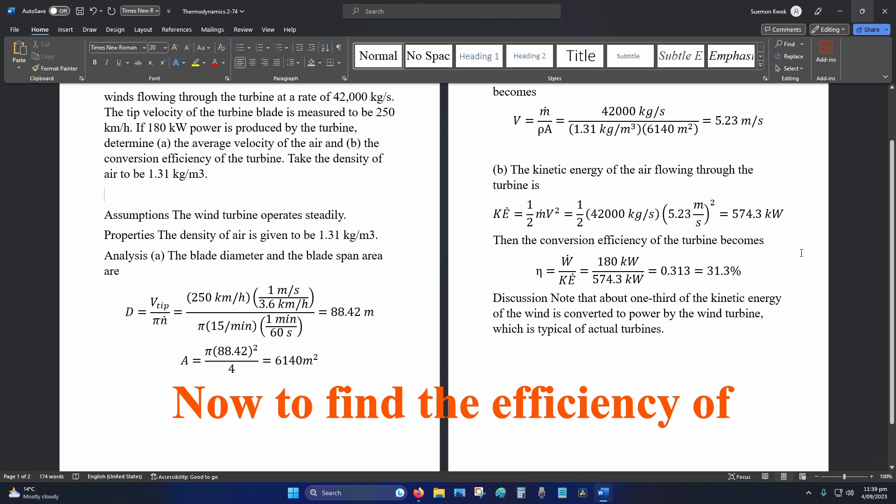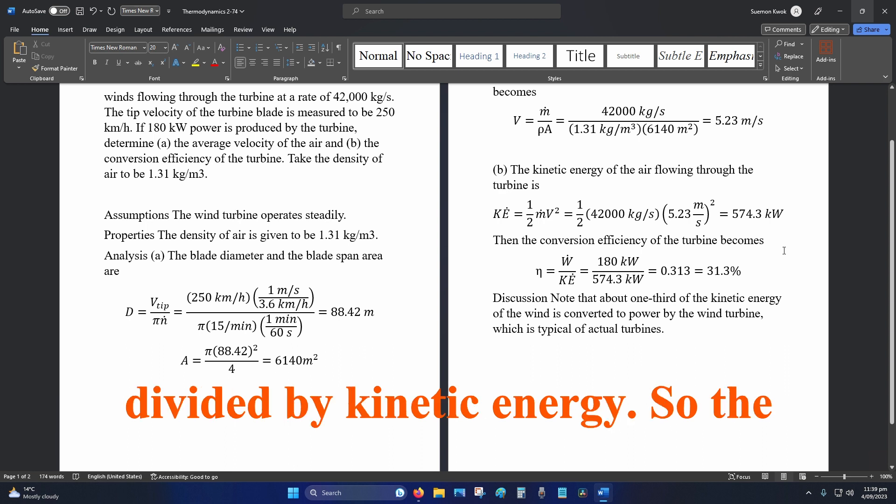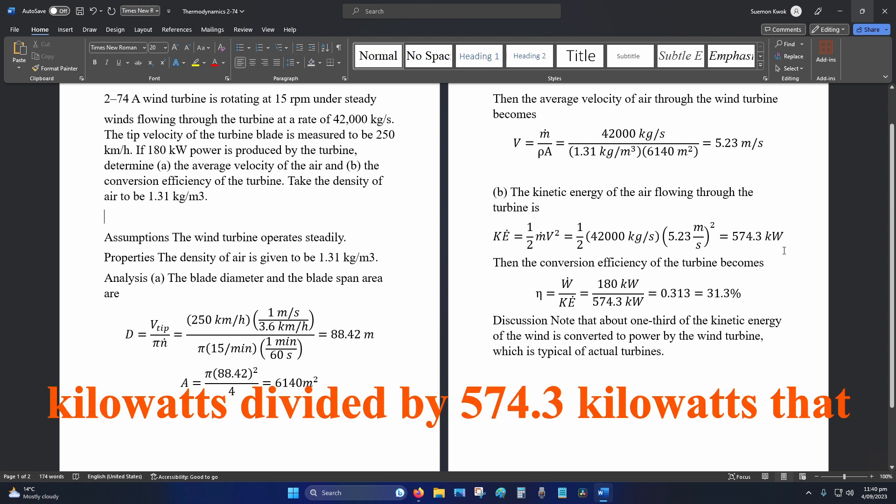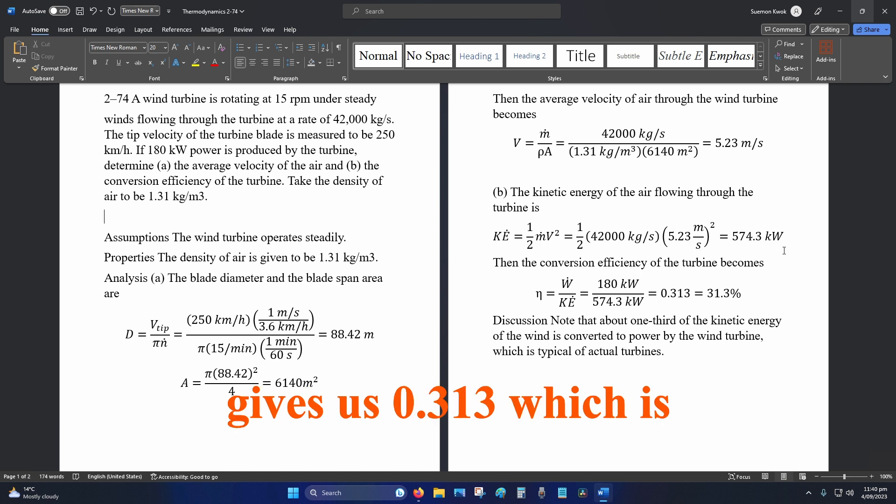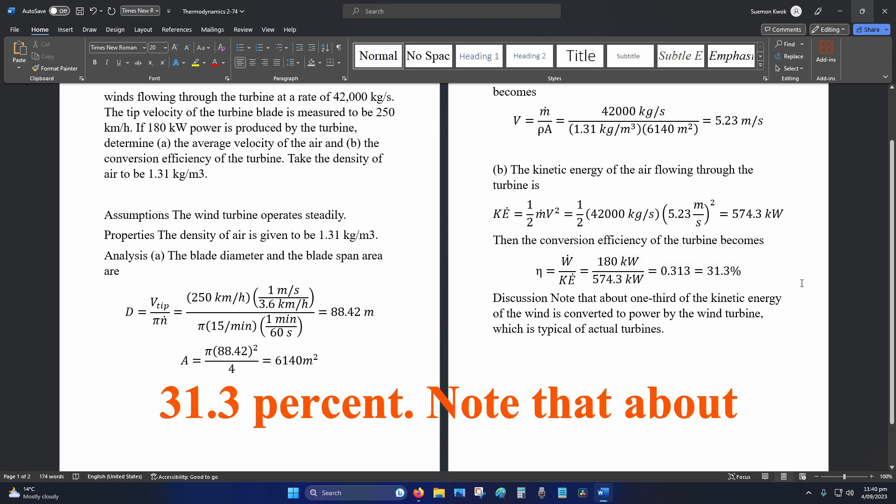To find the efficiency of the turbine, eta equals power divided by kinetic energy. The generated power is 180 kilowatts divided by 574.3 kilowatts, which gives us 0.313 or 31.3 percent.